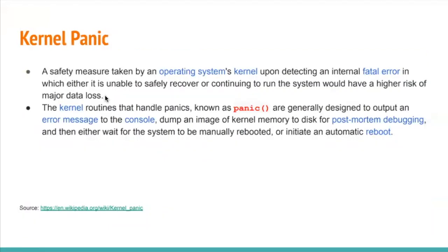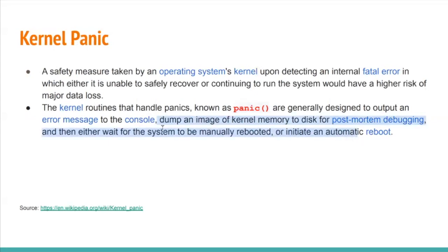Kernel panic is a mechanism by which the kernel tries to recover when it cannot continue executing or there is a high risk of data loss. It handles the panic situation with the panic() function. It prints a message to the console, dumps the contents of registers and function calls, and tries to reboot the system automatically.